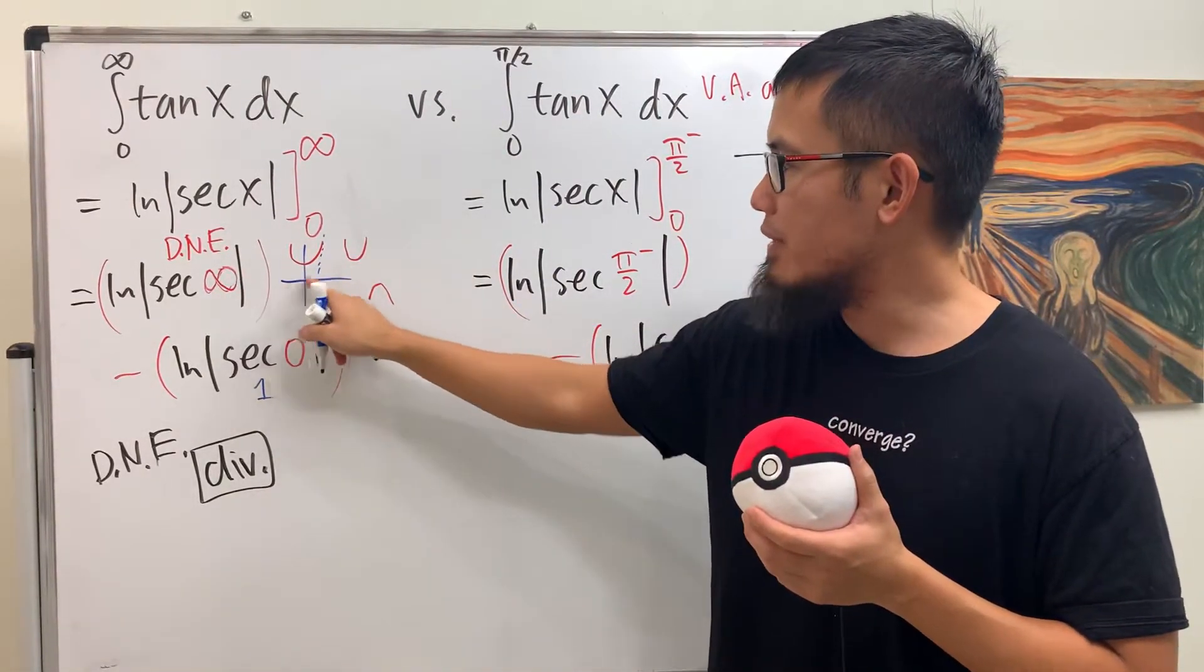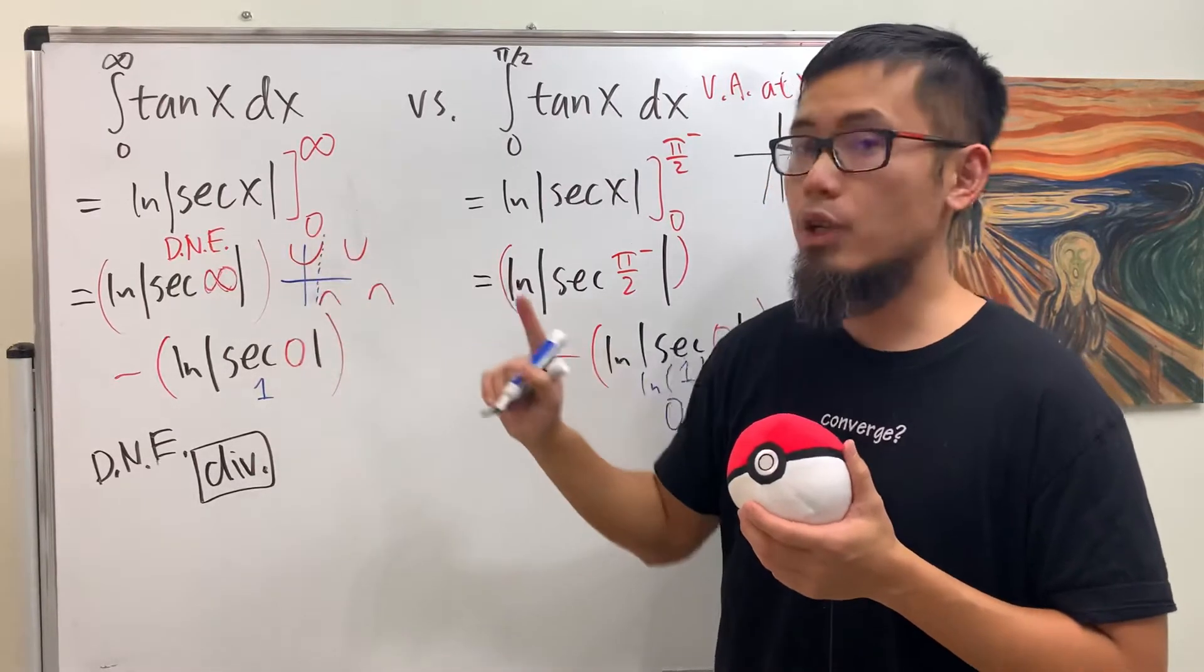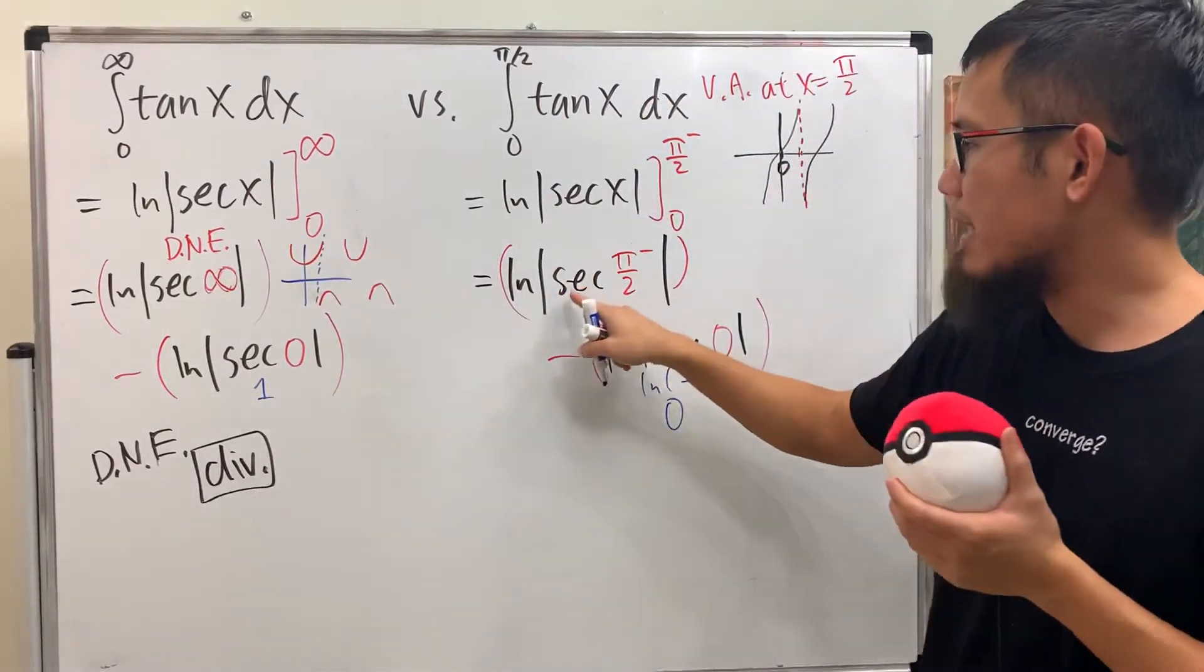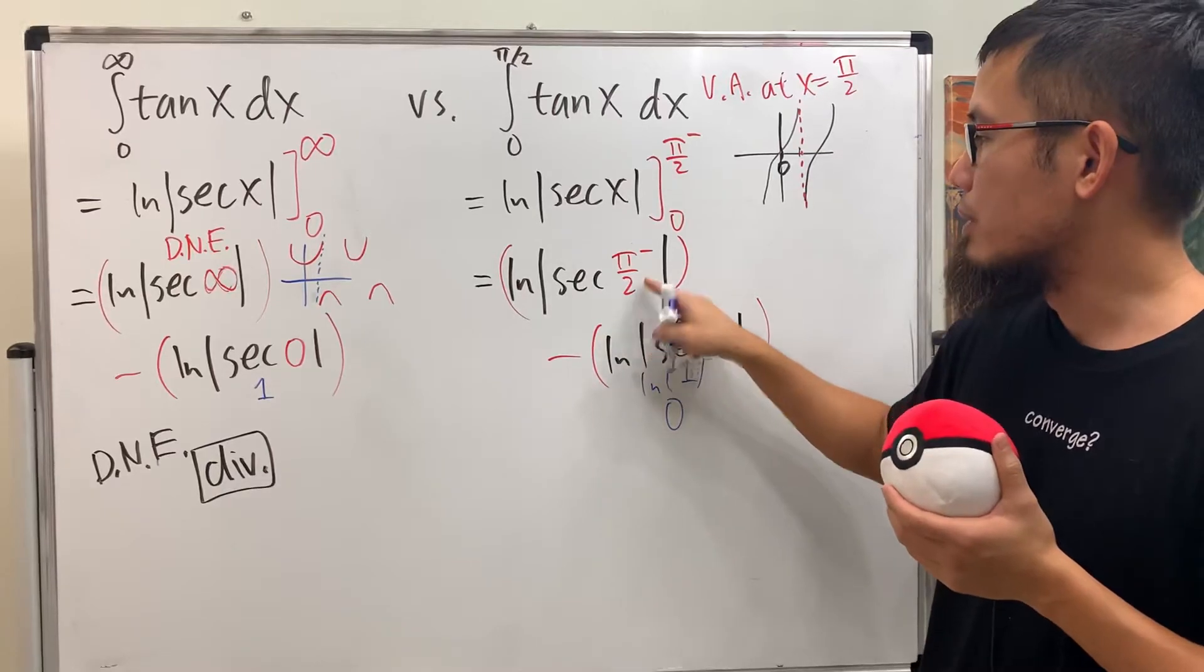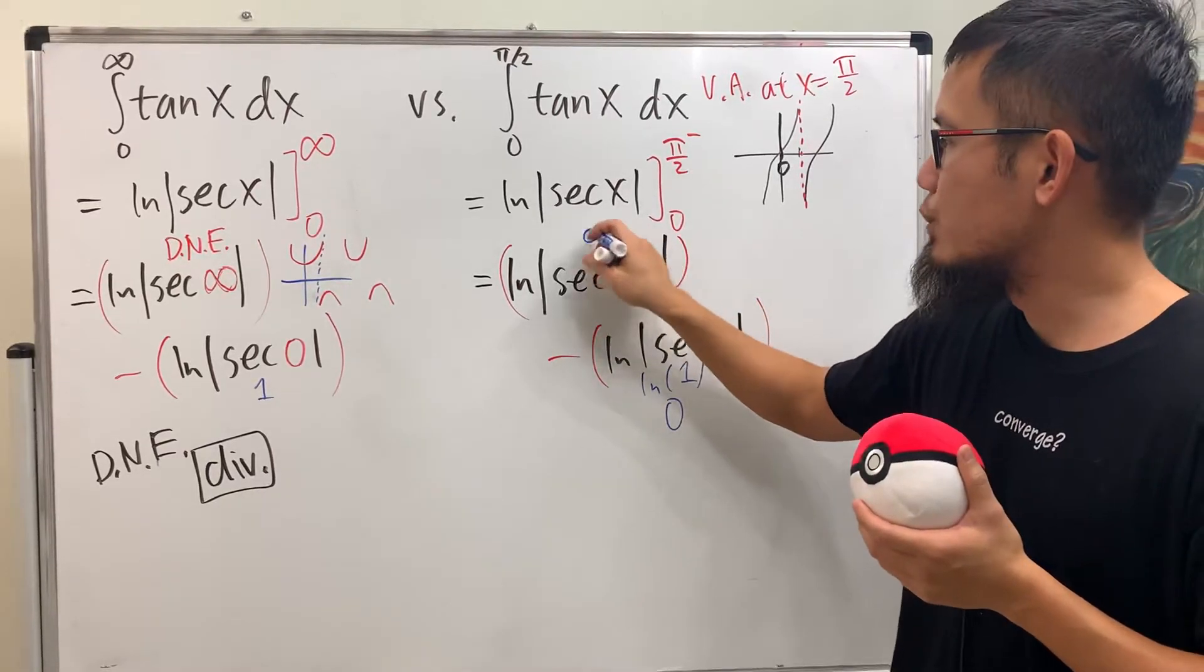if you go to π over 2 from the left-hand side, you see that the graph goes straight up. So in fact, secant of π over 2 minus gives you infinity.